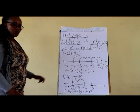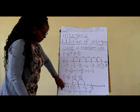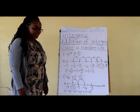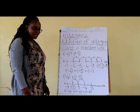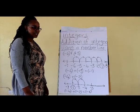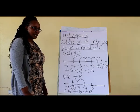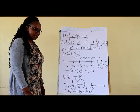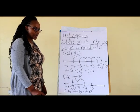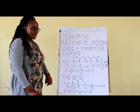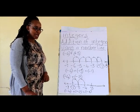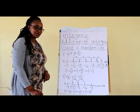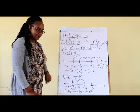What is our main point here? When adding a positive integer, move to the right of the number line. And when adding a negative integer, you move to the left of the number line.